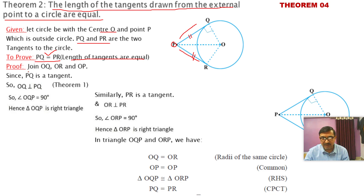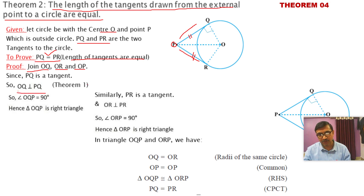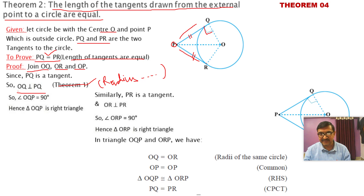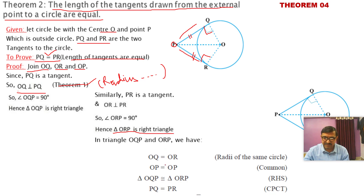Construction: join OQ, OR, and OP (shown as dotted lines). Since PQ is a tangent, OQ is perpendicular to PQ — by the radius-to-tangent theorem (radius to the tangent is always perpendicular). So angle OQP = 90°. Similarly, angle ORP = 90°. We now have two right triangles: triangle OQP and triangle ORP.